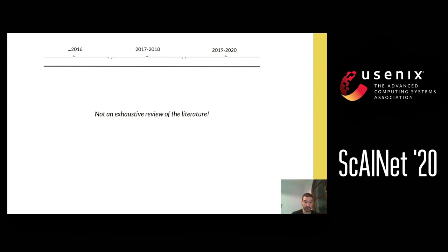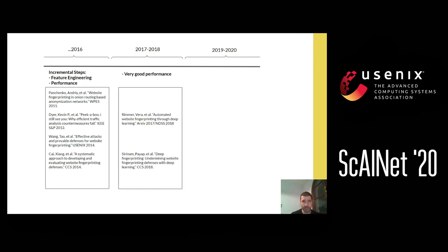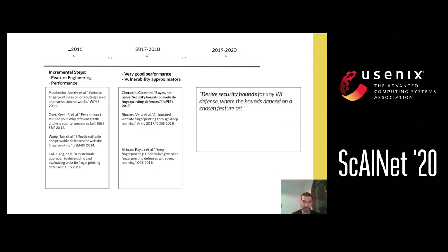We'll now go through a non-exhaustive review of the literature to see how machine learning helped advance the field in the last few years. Up until 2016, most literature worked with incremental steps in fingerprinting adversary performance, with elements of feature engineering and small advancements in the fingerprinting technique itself. Since 2017, deep learning models became more common in that community, and the key advantage was that you no longer have to do feature engineering manually — a deep learning model can do it in an automated manner.